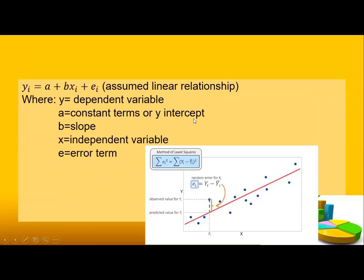We have here an example of a linear relationship — this is an example of the line and the method of least squares.